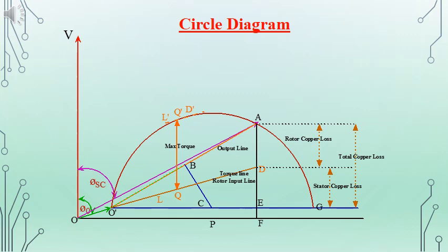To obtain the maximum torque condition, we consider the torque line or rotor input line O'D and draw a tangent to the semicircle parallel to it — given as L'Q'D. The length QQ' gives the maximum torque. For maximum output from the machine, we draw a tangent to the semicircle parallel to the output line O'A — given as K'S'A'. The length SS' to scale provides the maximum output from the machine.